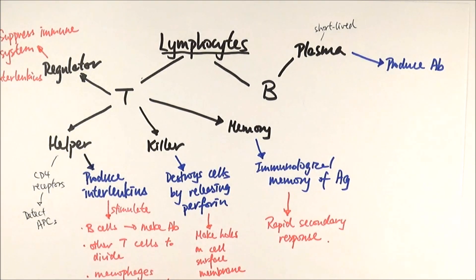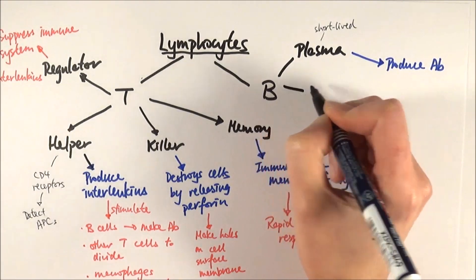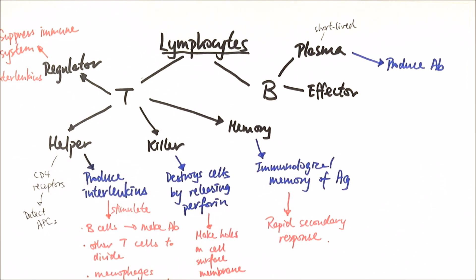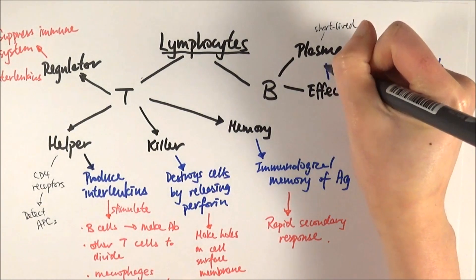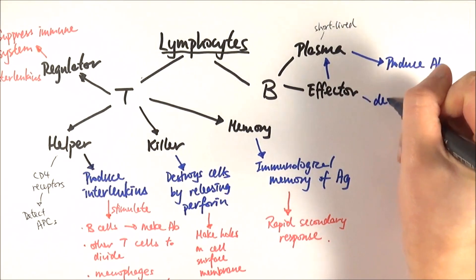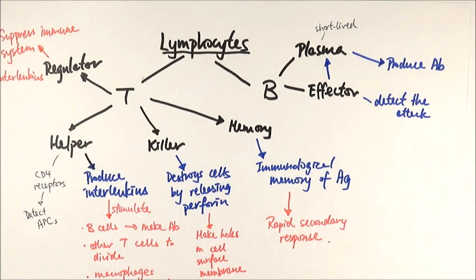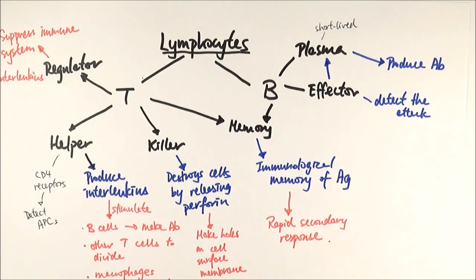Since B plasma cells are short-lived, they must be activated or remain dormant most of the time. We have something called B effector cells, which are essentially the inactive precursor form of B plasma cells — they produce plasma cells when they detect an attack. Finally, we have B memory cells, which provide immunological memory of the antigen so that they can quickly divide into plasma cells and coordinate a rapid secondary response.